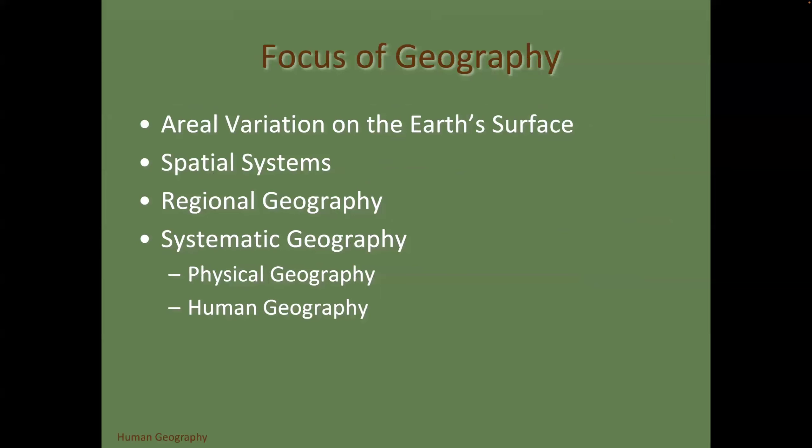There's regional geography, which is very specific — you go section by section, like North America, Europe, East Asia, South Asia — focusing on one area. Systematic geography breaks it down into physical and human components. In this course we're going to focus on the human components. There's a separate course, GEO 101 Physical Geography, if you choose or need to take another course at some point.